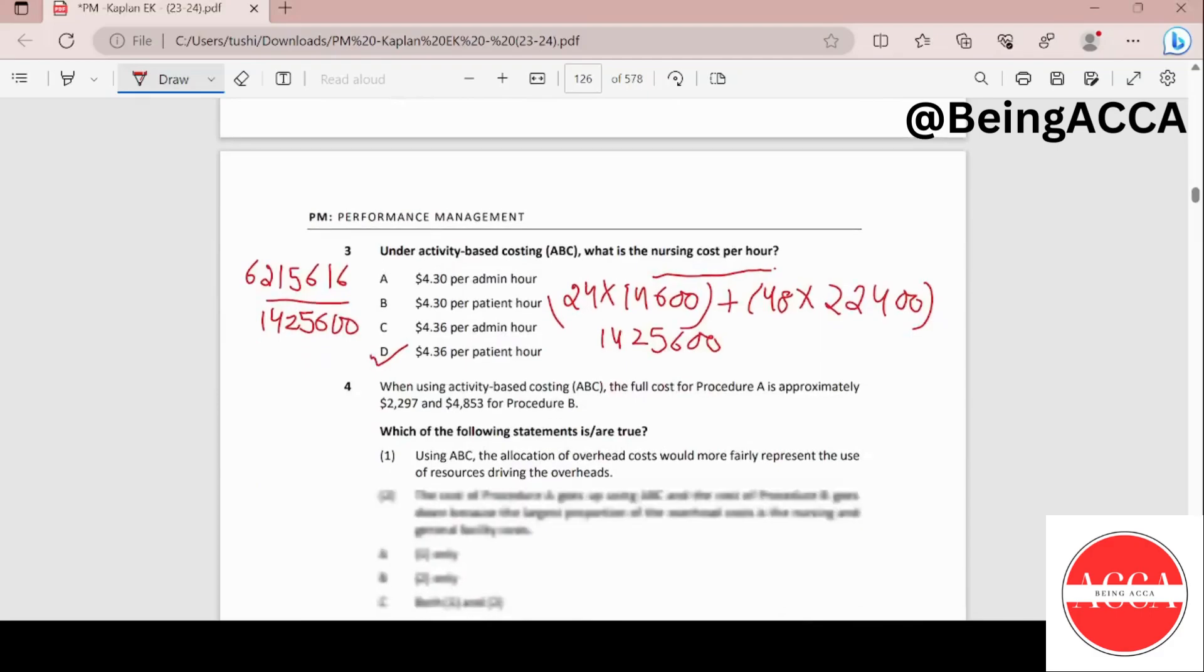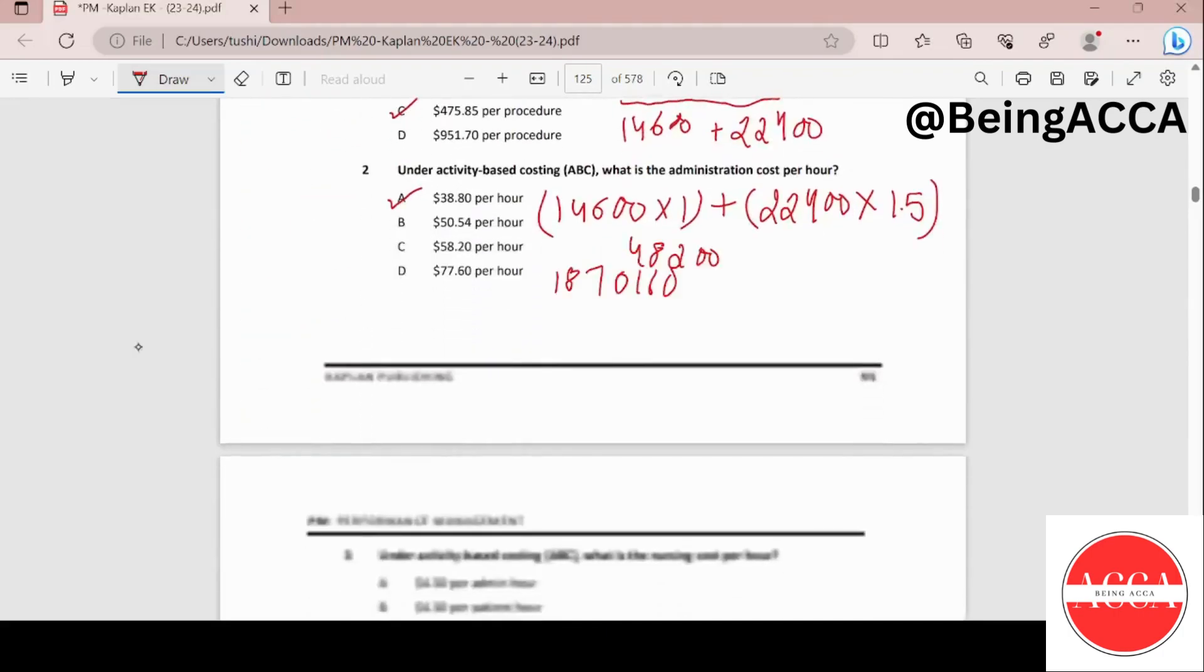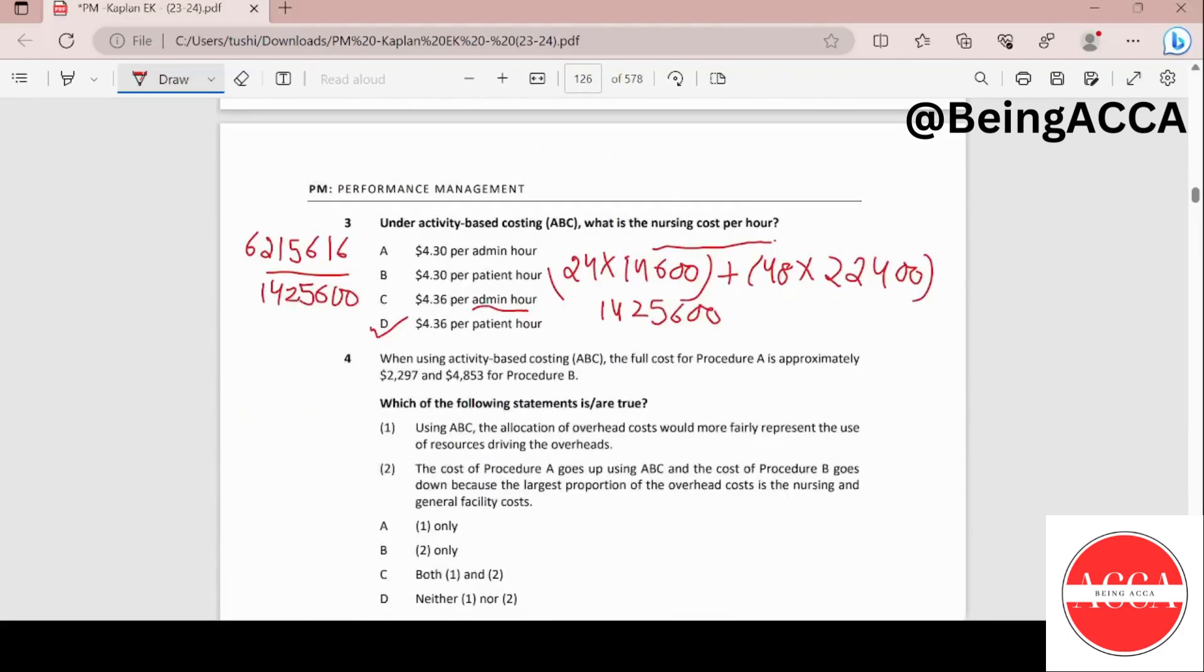Why did we not go for admin hour? This is because our cost driver is length of patient stay. These are patient hours. So that is why we went for option D.